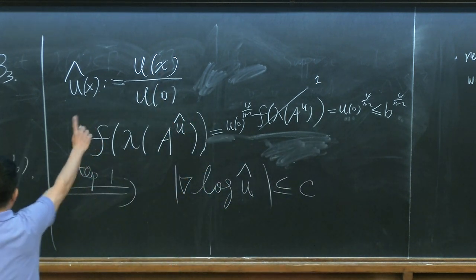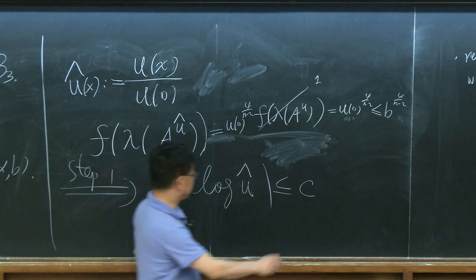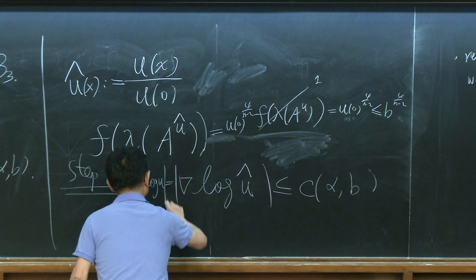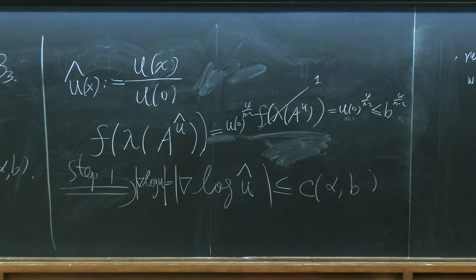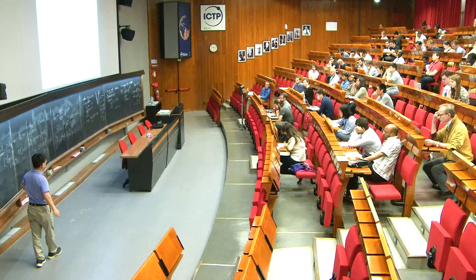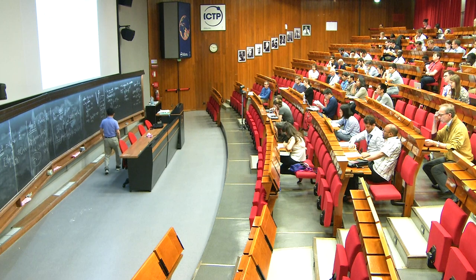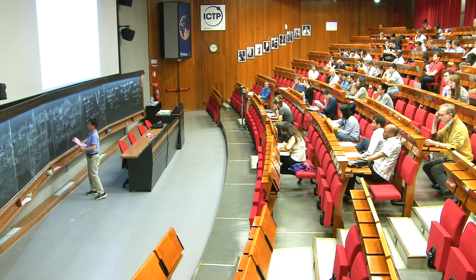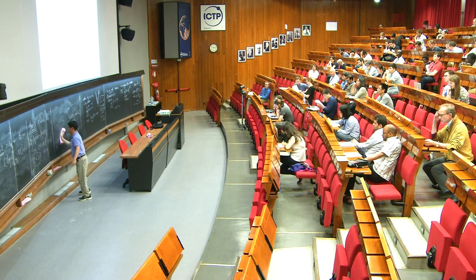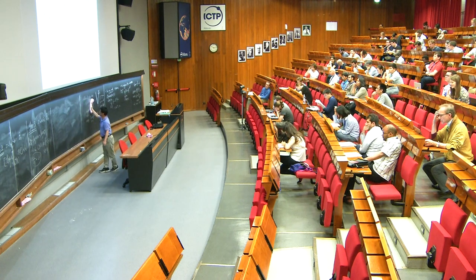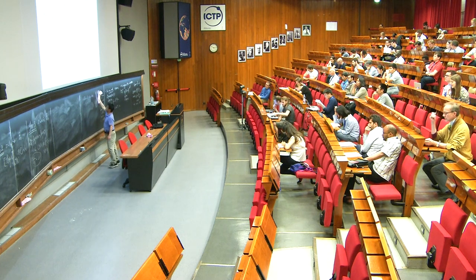Because this is upper and lower bounded by a constant now, this will be bounded by alpha and b, and this is the same as gradient log u. So the gradient estimate is proved by first proving there is an upper and lower bound, and then if there's only an upper bound, we prove a Hölder estimate. The main thing is to prove the Hölder estimates.